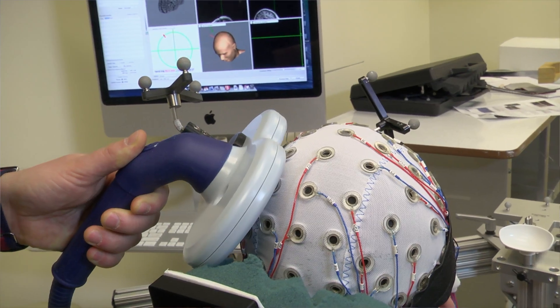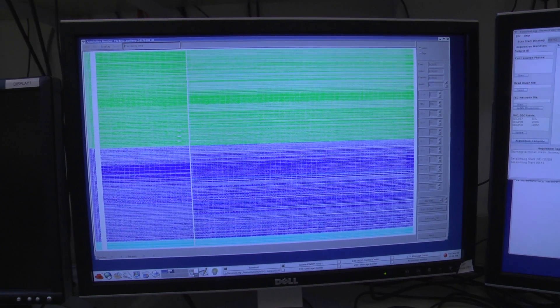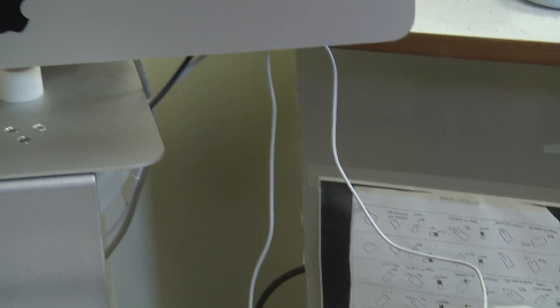In the second part, participants were stimulated with TMS while recording the EEG as well. This combination allowed us to explore whether the TMS really entrained brain oscillations, if we boosted those oscillations' amplitude, and also the phase of those oscillations with the stimulation.